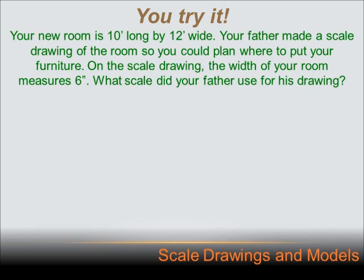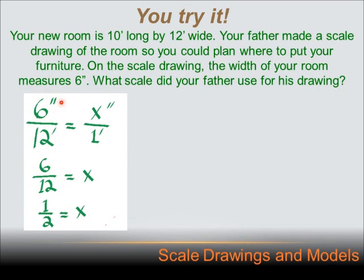What scale did your father use for this drawing? Let's think about this. Your father has reduced the size of the room so he can get it on a piece of paper. He couldn't get a 12-foot dimension on a piece of paper, so he had to reduce it to make a scale drawing. He reduced that 12 feet to 6 inches. So what he's told you is his scale is there are 6 inches on the drawing per 12 feet in the real room. Let's set it up that way: 6 inches per 12 feet. That's really your scale. But it's customary to reduce it to a unit that's a little easier to work with than 6 over 12. We're going to say 6 inches over 12 feet equals how many inches over 1 foot. We're going to set those two proportions as equal.